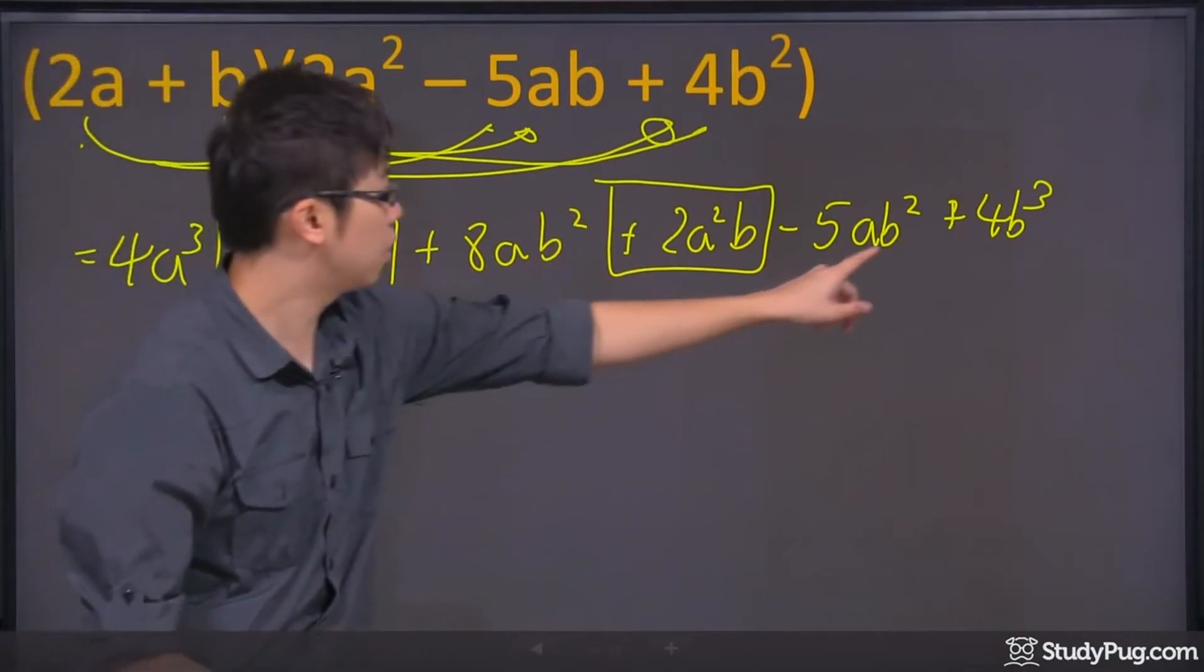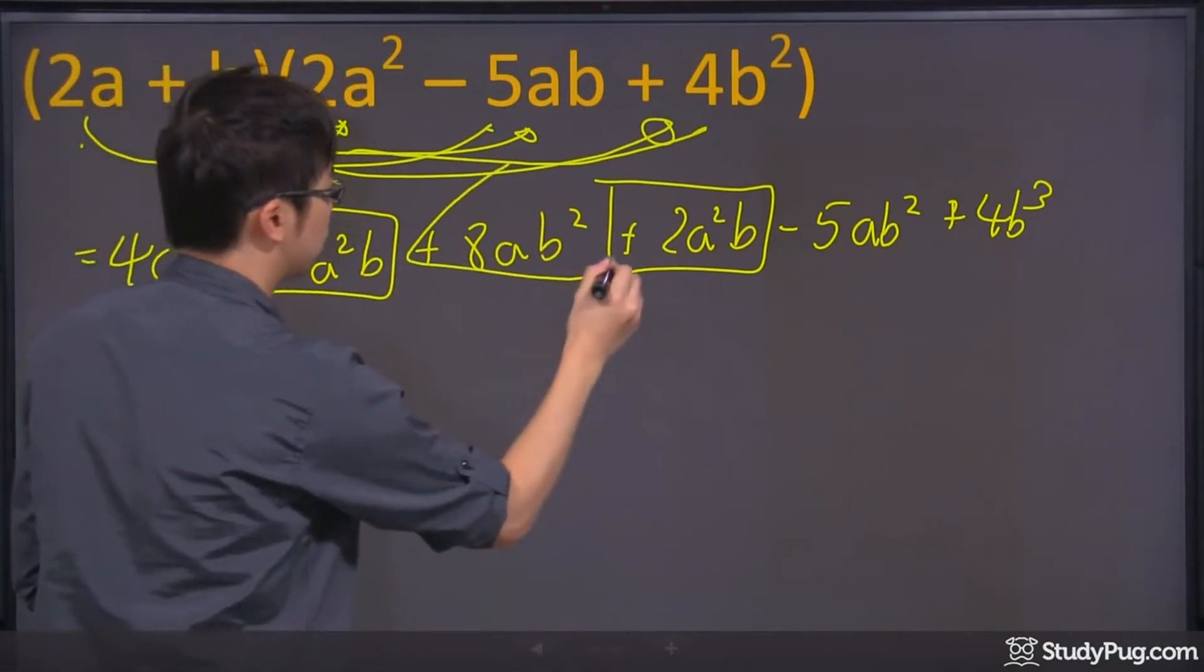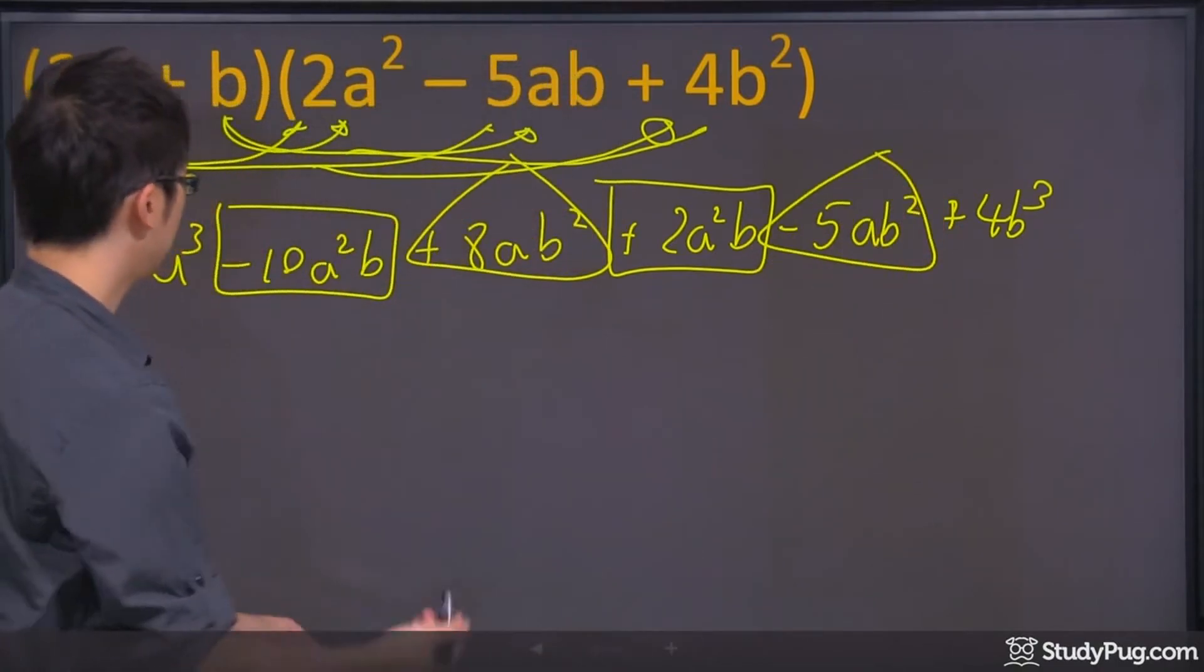We got a b squared here and a b squared, so these two guys right here has to be collected as a like term.